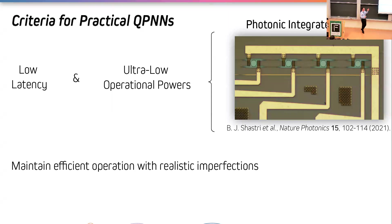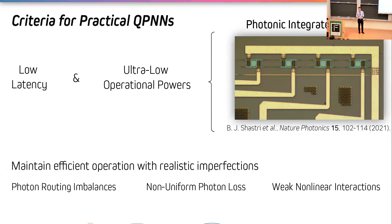To start looking down that path, we can establish some criteria for practical quantum photonic neural networks. The first is low latency and ultra-low operational powers, as necessary for all of those previous applications. By choosing the photonics platform we've already met these criteria, as we can leverage the maturity of photonic integrated circuits. Most importantly, these networks need to maintain efficient operation with realistic imperfections including photon routing imbalances, non-uniform photon losses, and most significantly, weak non-linear photon-photon interactions.